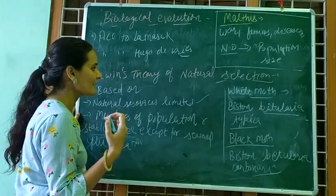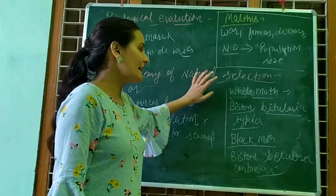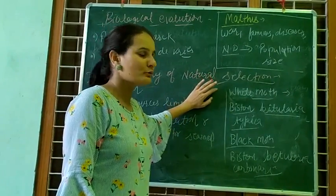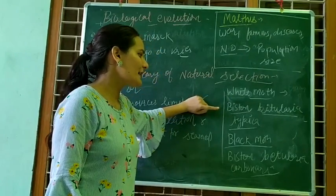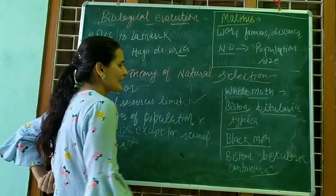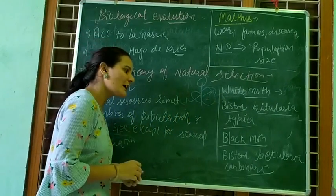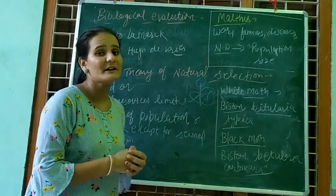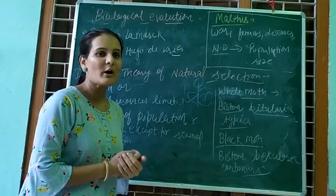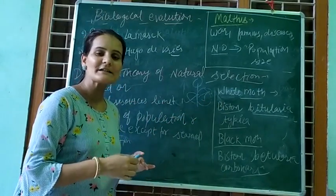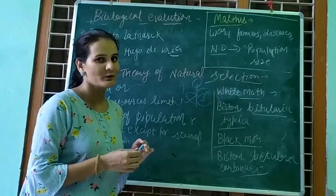What is an example of natural selection? Industrial melanism. In England, there is a moth called the peppered moth. Its geological name is Biston betularia, which is a white moth. It sits on trees and blends in with the light-colored bark. But with industrialization, pollution caused trees to turn black in color.